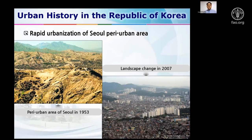Nowadays Seoul has become a mix of green and gray — what I call the harmony between green and gray. It's not the best place for birds, but it is where I live.